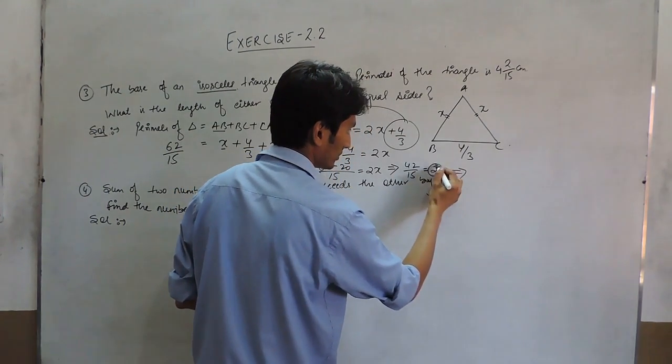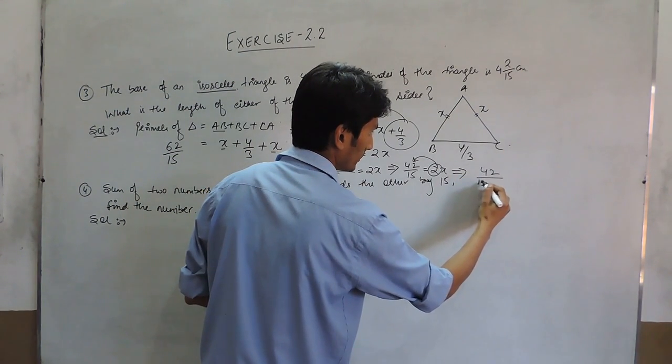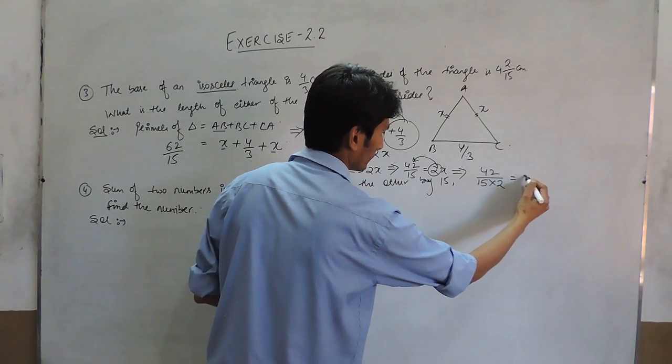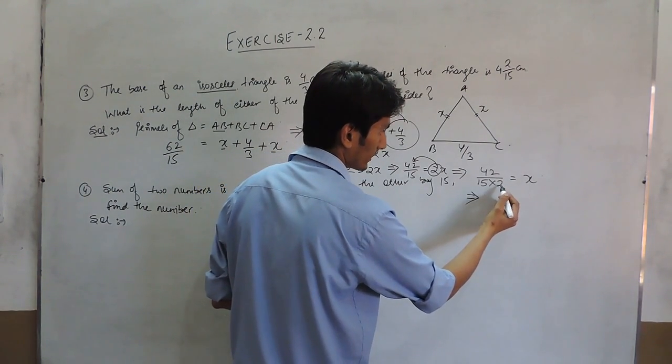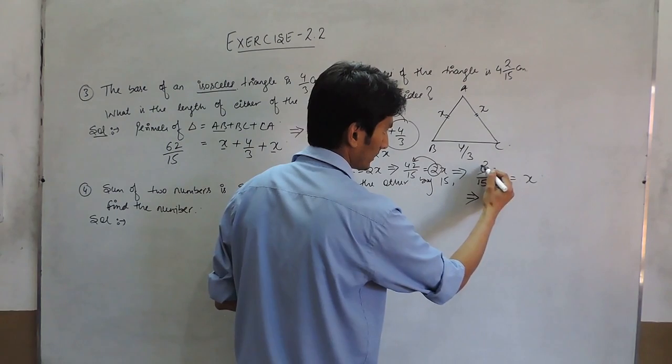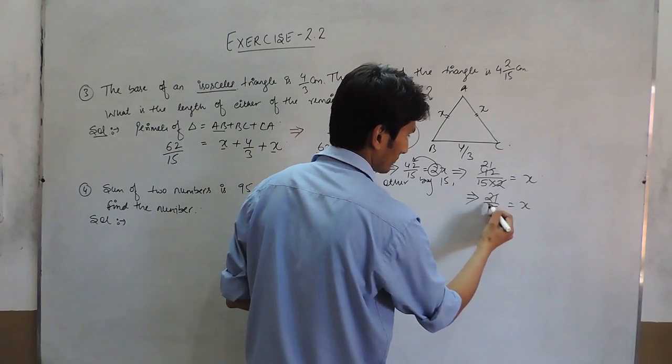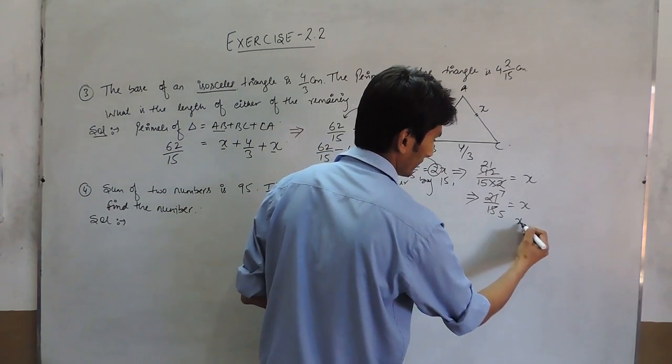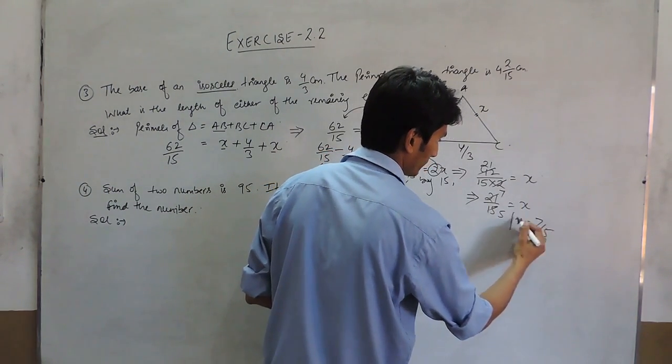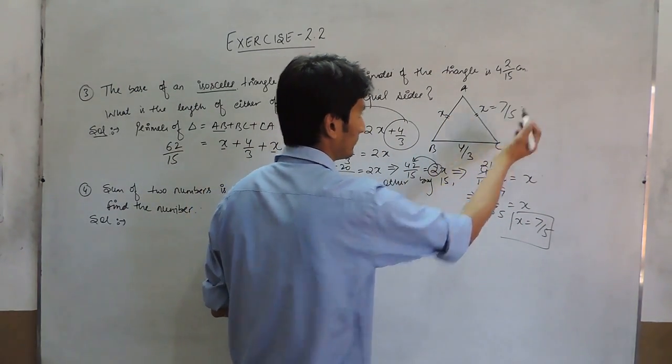it is 42/15 equals 2X. And when this is shifted to this side, it should come in the denominator. And when this is cancelled out, it will become 21/15X, which is further cancelled out at 7/5. So, X will become 7/5. So, this answer should be 7/5.